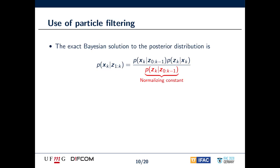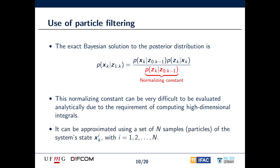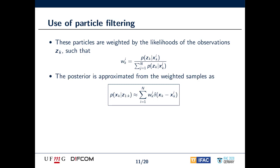The exact Bayesian solution to the posterior distribution can be analytically computed as shown in this equation. To solve the equation, it is necessary to compute the normalizing constant in red, which can be very challenging in most contexts. This is because the integrals that need to be solved become very complex and high-dimensional in non-linear and non-Gaussian scenarios. Particle filters are used to overcome this difficulty. It approximates the posterior distribution using a finite set of samples from the system state. These particles are weighted by the likelihoods of the observations. The weights are given as the rescaled likelihoods. Then the posterior distribution can be approximated as the weighted average of the particles. As n tends to infinity, the approximation tends to the true value.